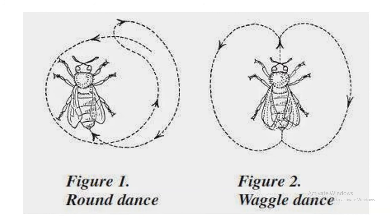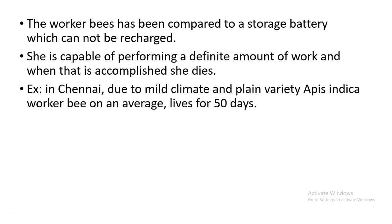Workers communicate how close the food source is through dances. The first type is a round dance, and the second type is a waggle dance, also called the tail-wagging dance. Workers have been compared to a storage battery that cannot be recharged — they are capable of performing a definite amount of work, and when that is accomplished, she dies. For example, in Chennai, due to mild climate and with Apis indica, a worker bee on average lives for 50 days, but more commonly they survive for only six weeks.